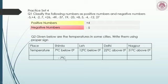For Leh: 12 degrees centigrade below zero — so the answer is −12 degrees centigrade. For Delhi: 22 degrees centigrade above zero — above zero means it is a positive number, so the answer is 22 degrees centigrade. You need not write the plus sign because it is a positive number. You can complete the last one on your own.